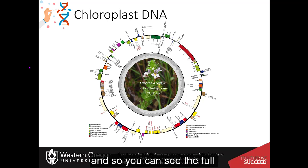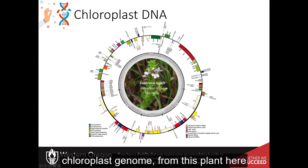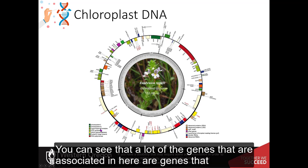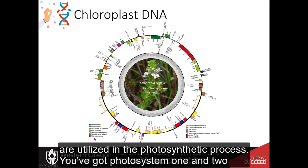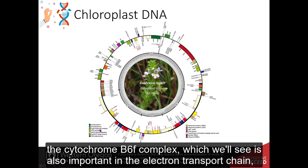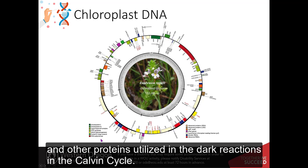And so you can see the full chloroplast genome from this plant here is shown. And it has 153,000 base pairs. You can see that a lot of the genes that are associated in here are genes that are utilized in the photosynthetic process. You've got photosystem 1 and 2, the cytochrome B6F complex, which we'll see is also important in the electron transport chain, and other proteins that are utilized in the dark reactions in the Calvin cycle.